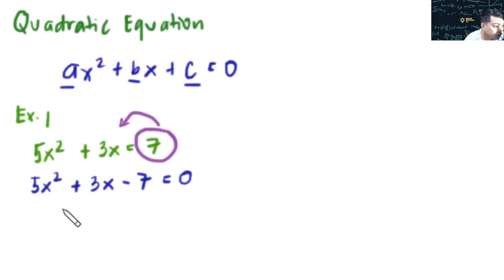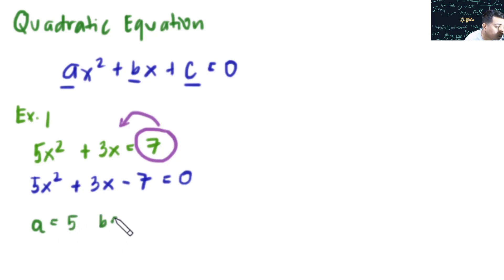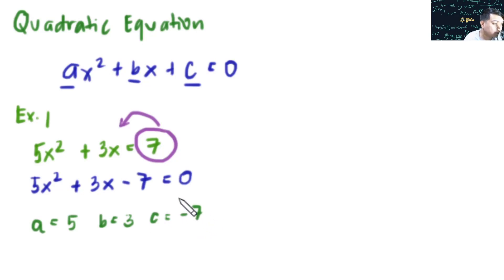We can now determine the values for a, b, and c. For a, we have 5. For b, that is 3. And for c, that is negative 7.